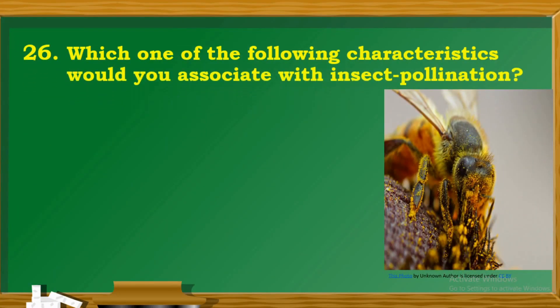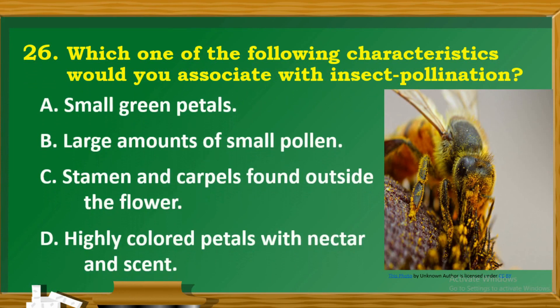Question 26: Which one of the following characteristics would you associate with insect pollination? A. Small green petals. B. Large amount of small pollen. C. Stamen and carpels found inside the flower. D. Highly colored petals with nectar and scent.